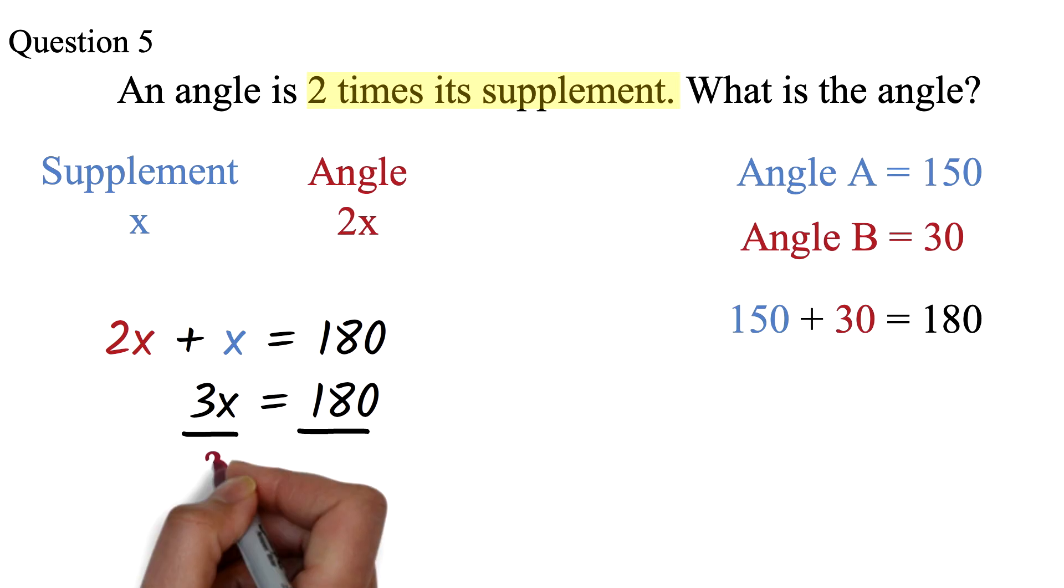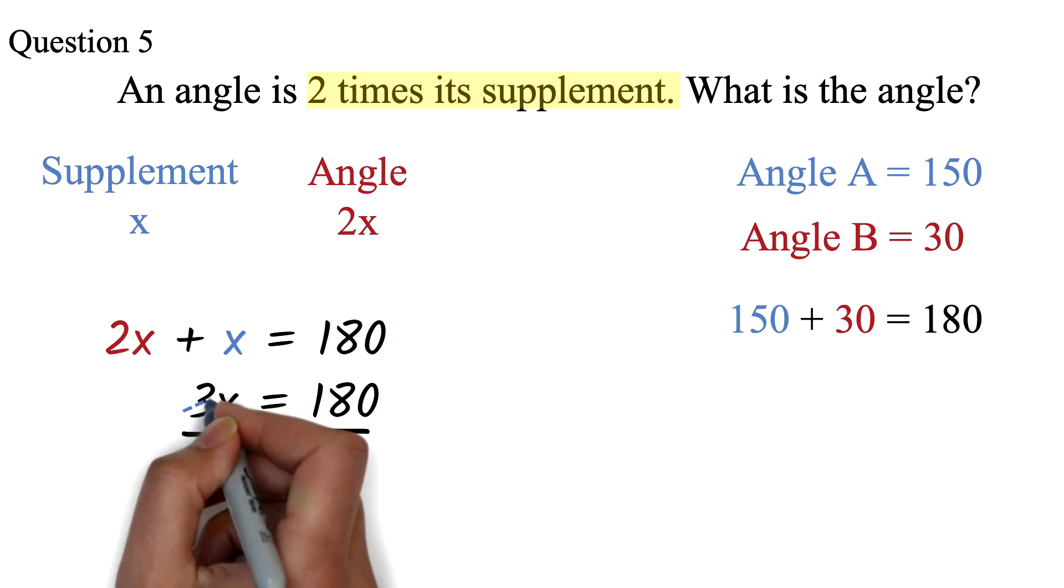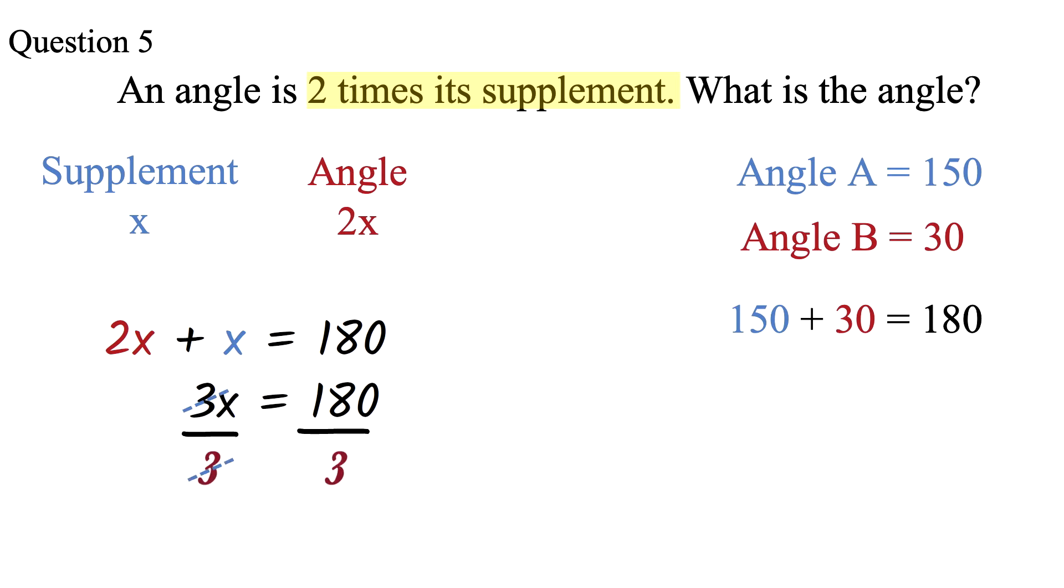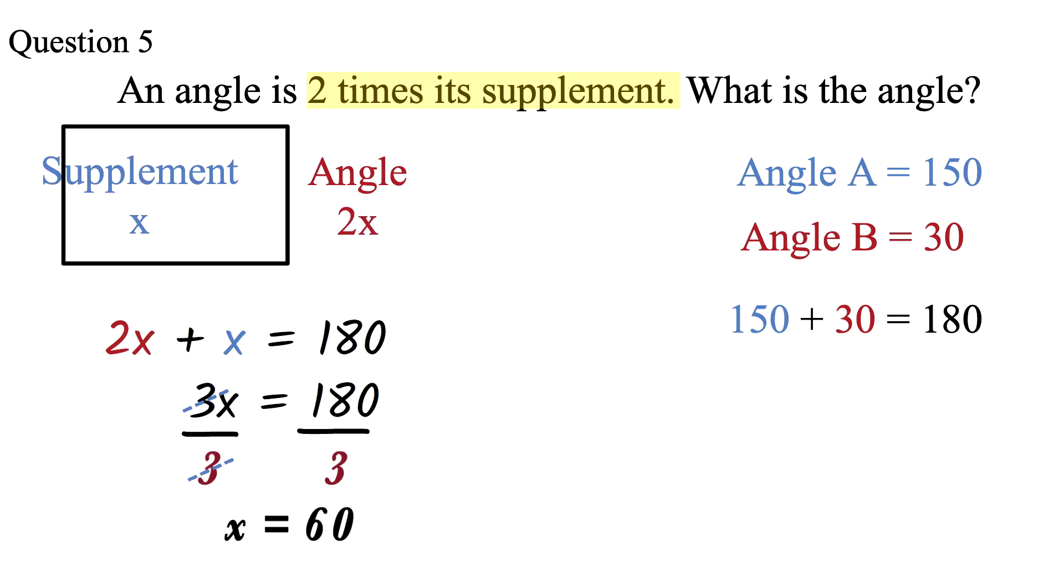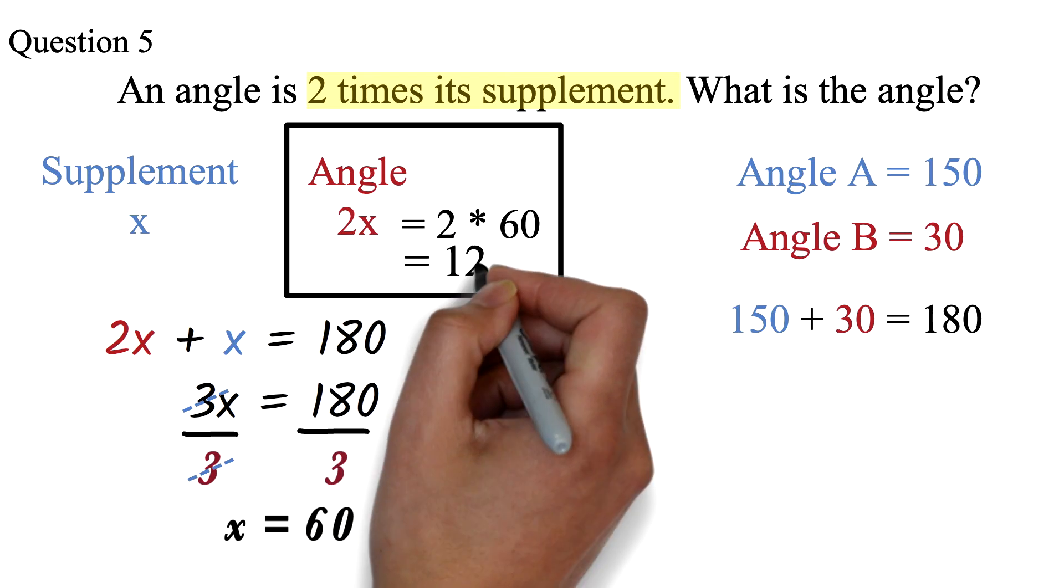We can now divide both sides by 3. The 3 will cancel out. 180 divided by 3 is 60. So x equals 60. We have to be careful to note what the question is asking. What we just found is x and we know that x is the supplement. The angle is 2 times the supplement. So we have 2 times 60. The angle is therefore 120.